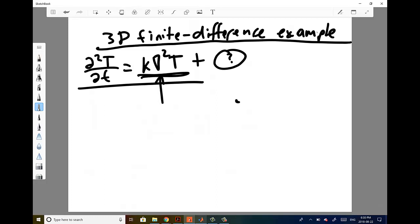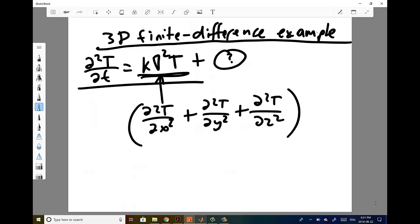So this del square operator, it's basically just a three-dimensional equivalent of a second derivative. If I expand this out in terms of second derivatives, I would get d²T/dx² plus d²T/dy² plus d²T/dz². That's basically all there is to this del square operator, or in terms of the heat equation.